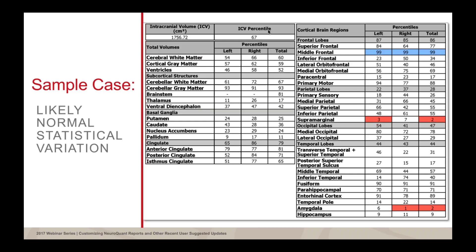The right side of the table shows the four main lobes: frontal, parietal, occipital, and temporal. One new parameter is the total value for the lobes — total left, total right, and total combined percentile for each lobe. The color coding remains the same: outside the 5th percentile is coded red, above the 95th percentile coded blue. For ventricles, the color coding is reversed — above 95th percentile is red, below 5th percentile is blue.